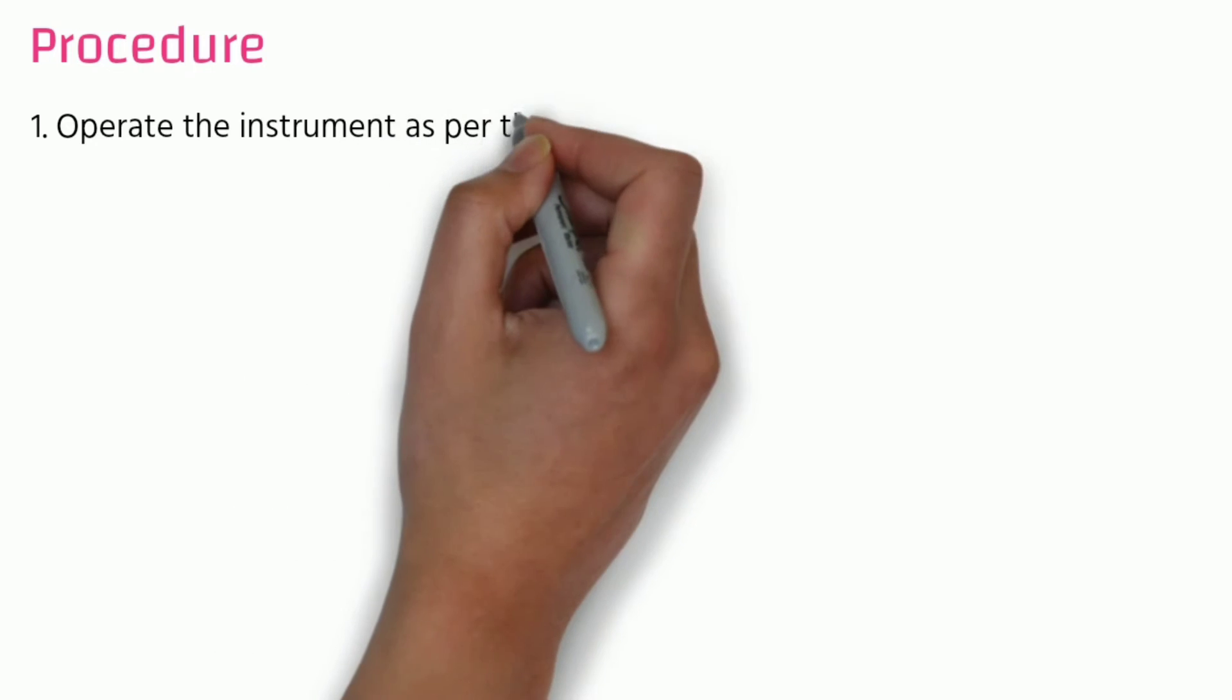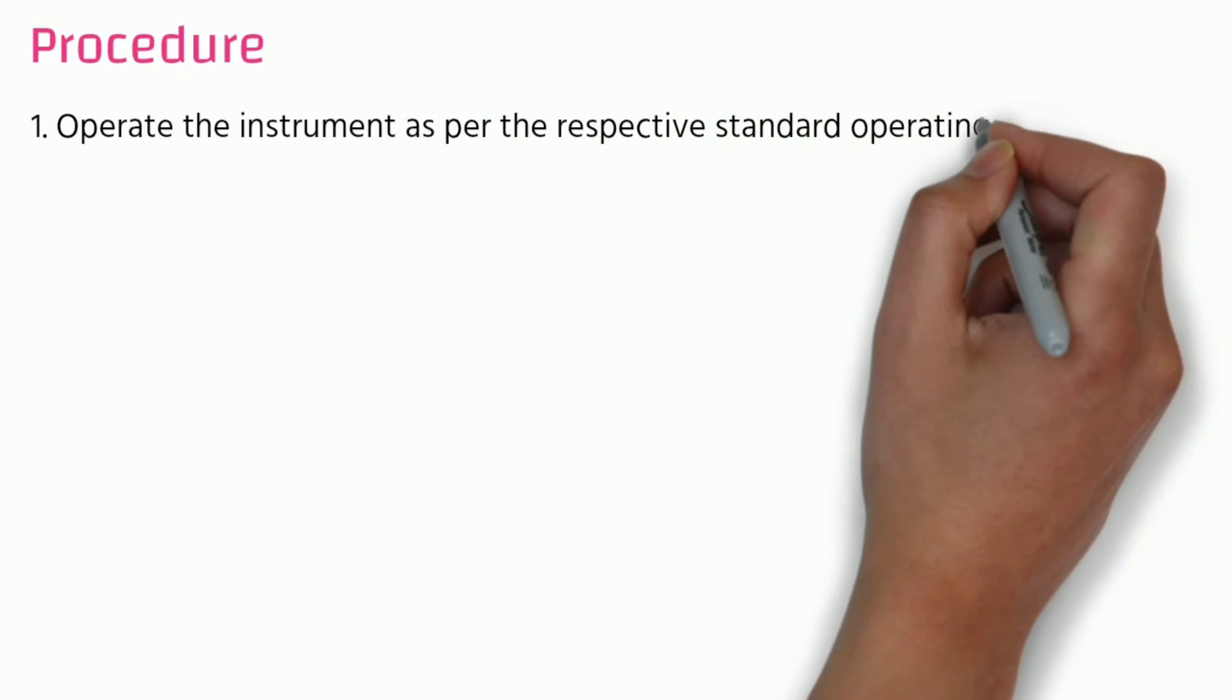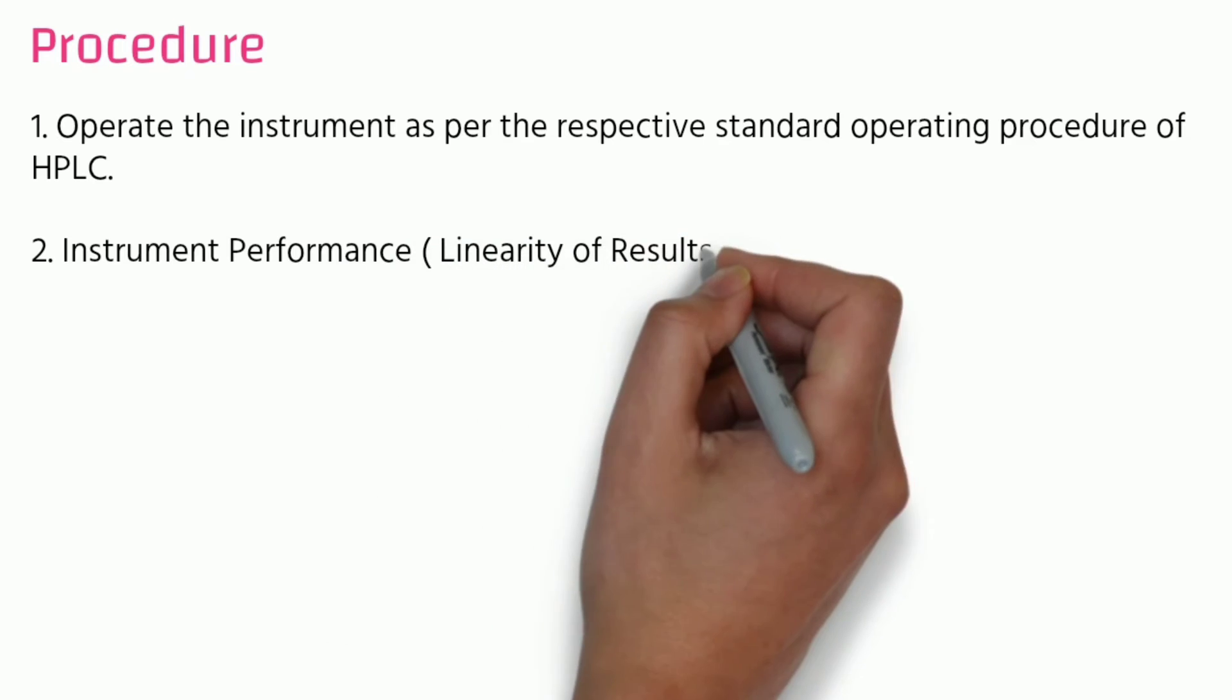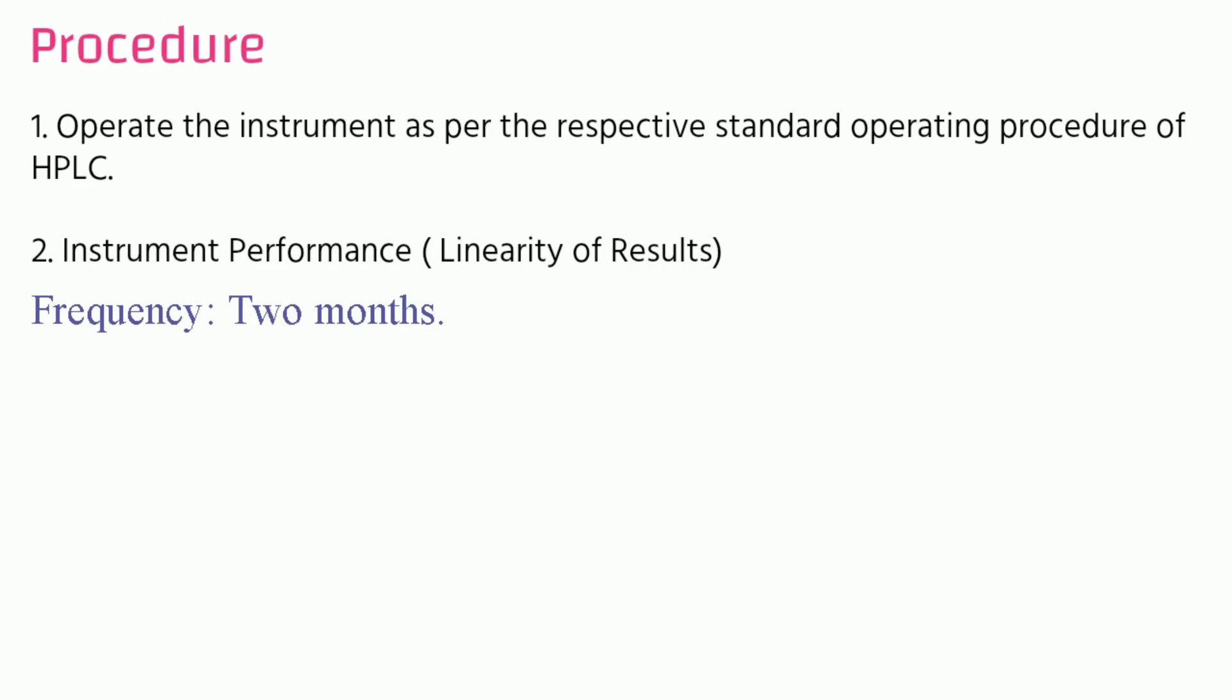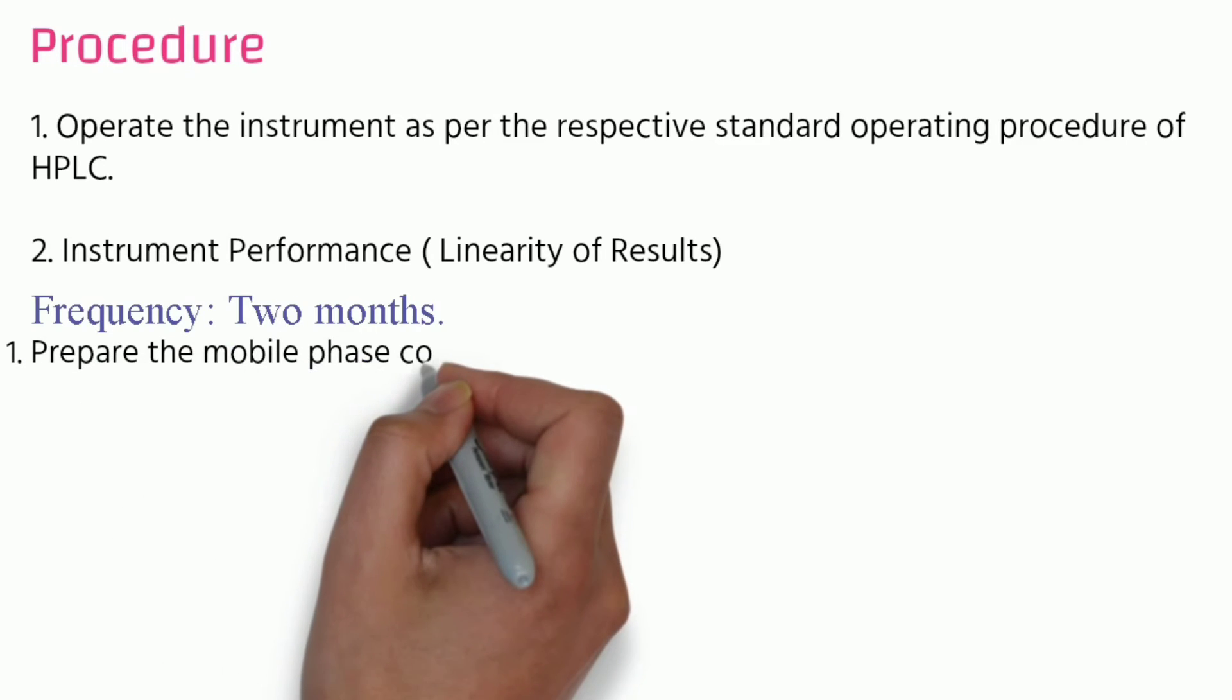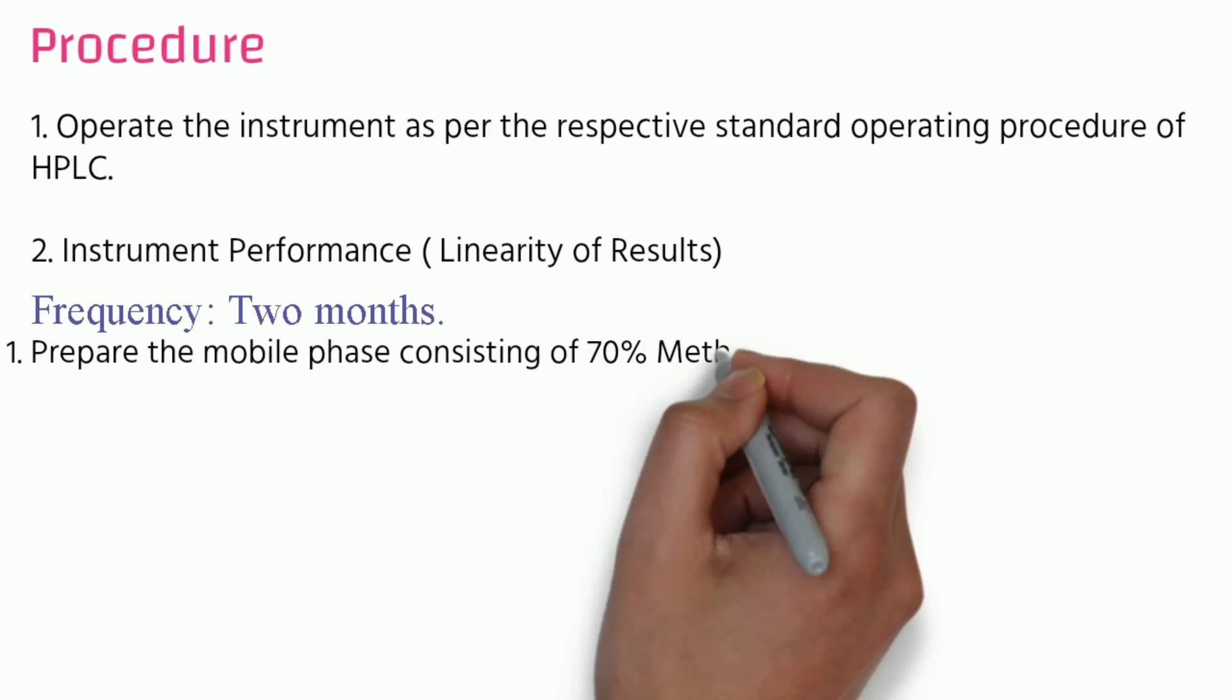Its procedure: Operate the instrument as per respective standard operator procedure of the HPLC. Instrument performance of linearity of results. Frequency: two months. Prepare the mobile phase consisting of 70 percent methanol and 30 percent water.